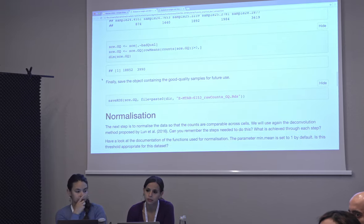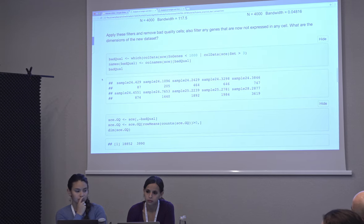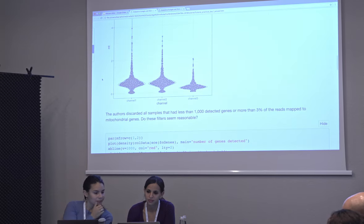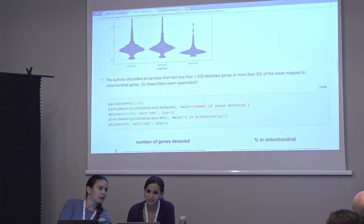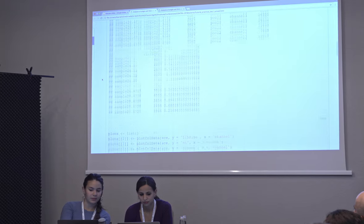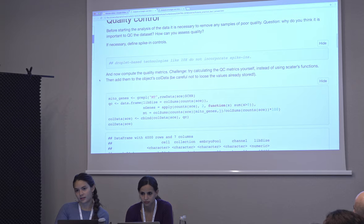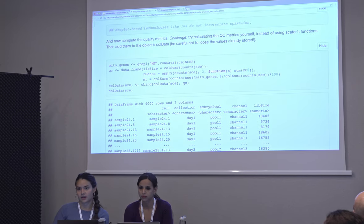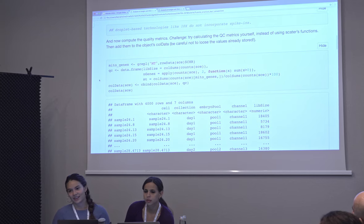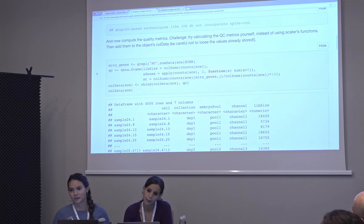Q: Did you compute the QC metrics manually? A: Yes — for library size, you count the counts by taking the sum of the counts. The idea was to manually do it instead of blindly using the built-in function without thinking — it's just another way of doing it so you actually know what those functions are doing. With `apply`, 2 means you're applying the function by columns — the second dimension — so you want to count the number of genes in each cell.